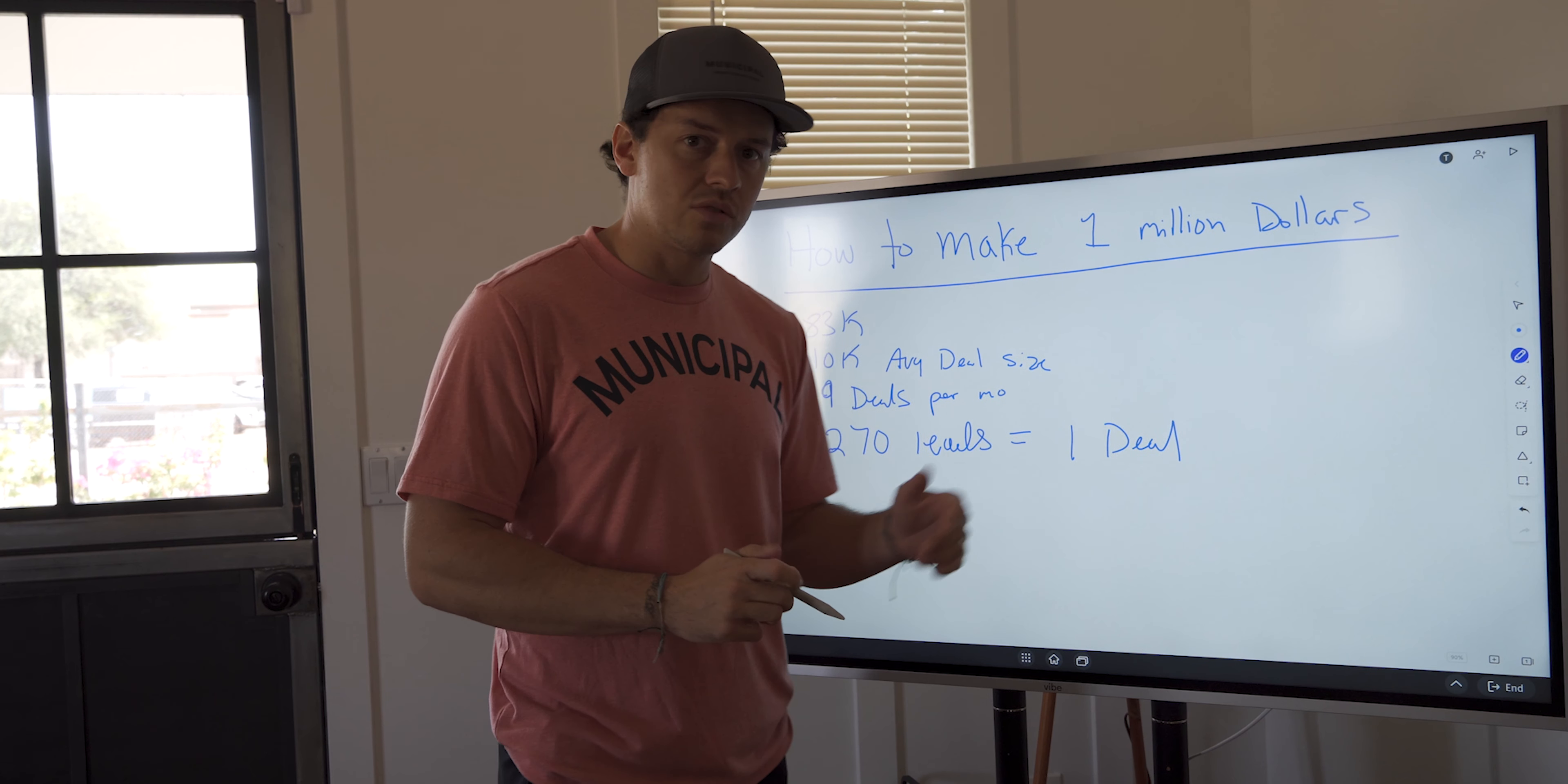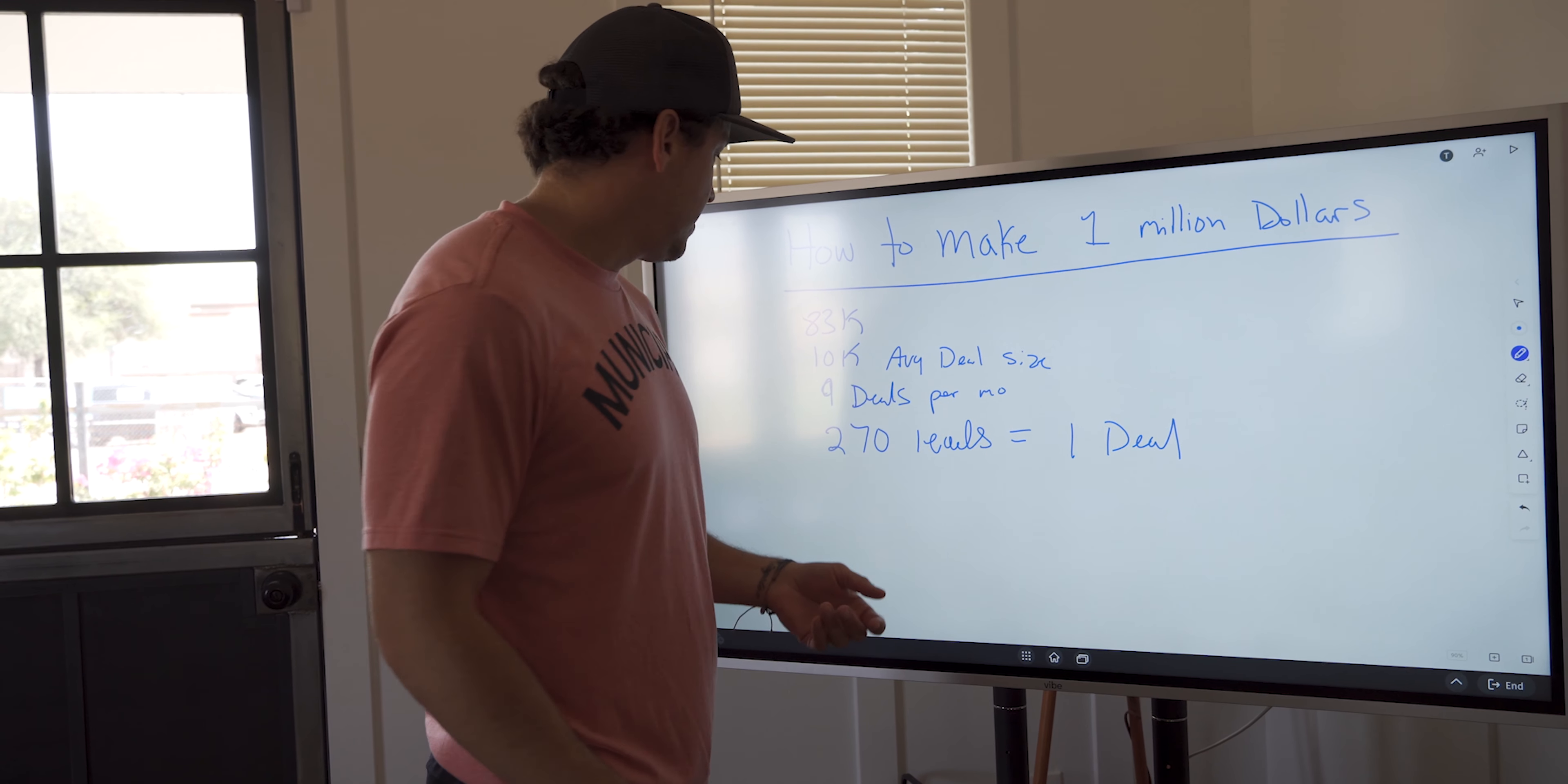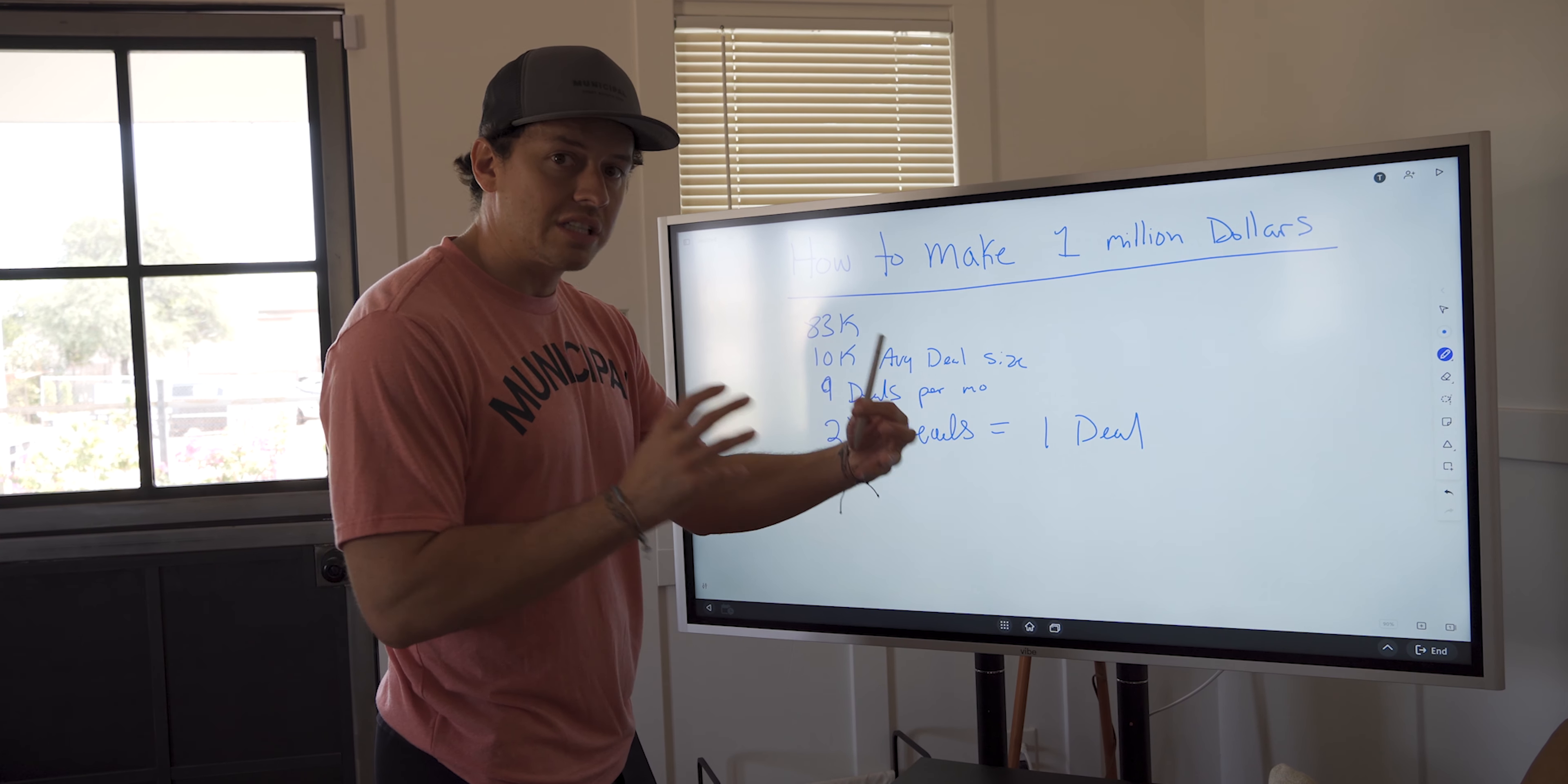That's about how my wholesale business works. So if I need my acquisition person to get me, if I have four acquisition people, actually for this example, it's just one person can do nine deals. So now you have to do 270 leads. How are you going to break that down into a monthly digestible thing?